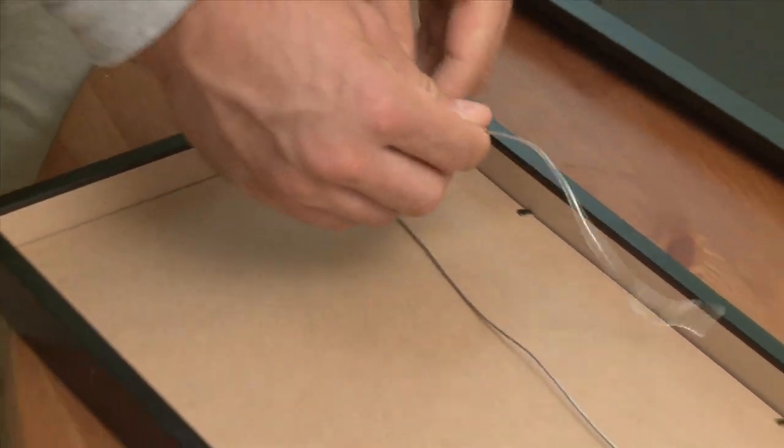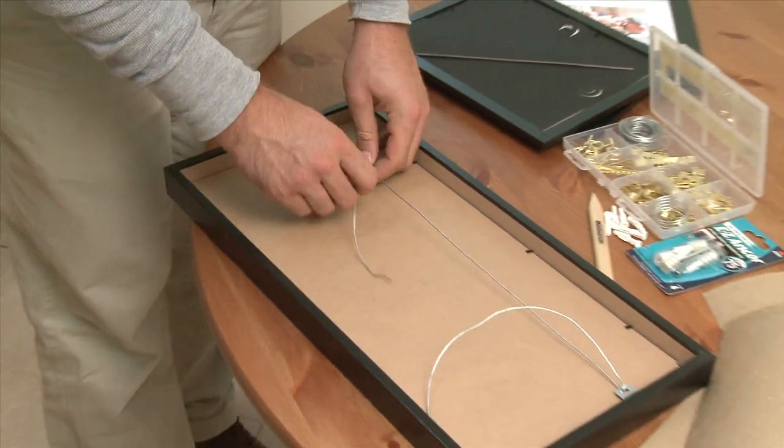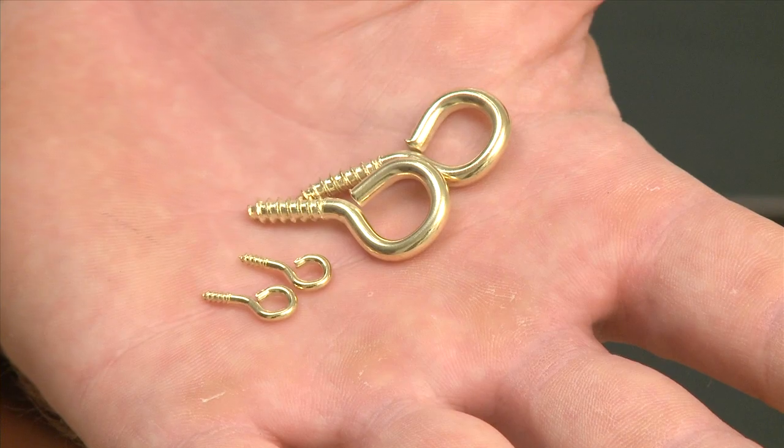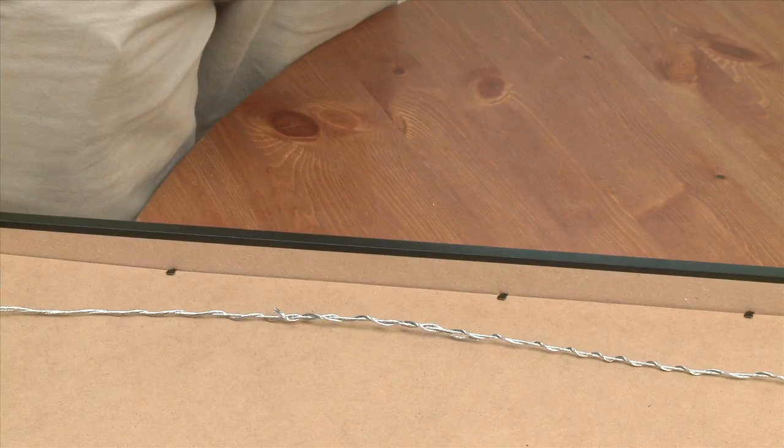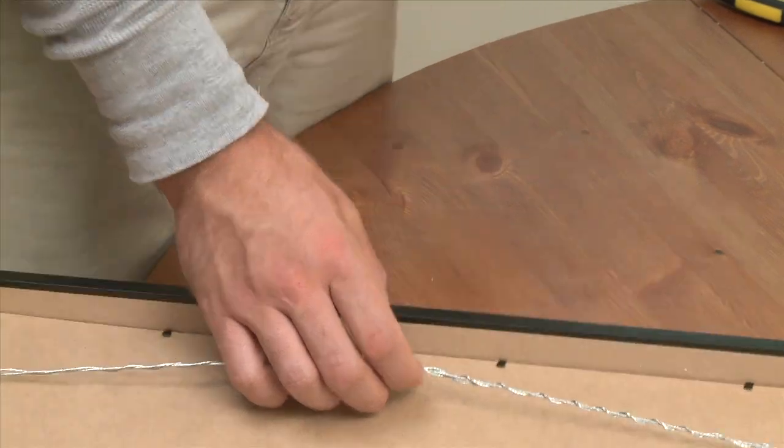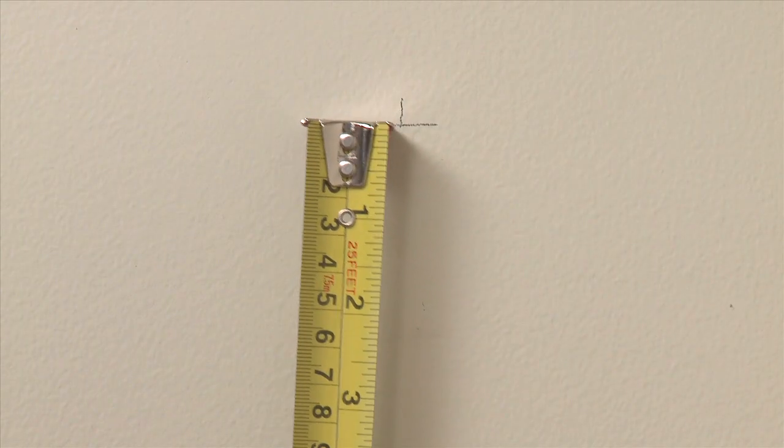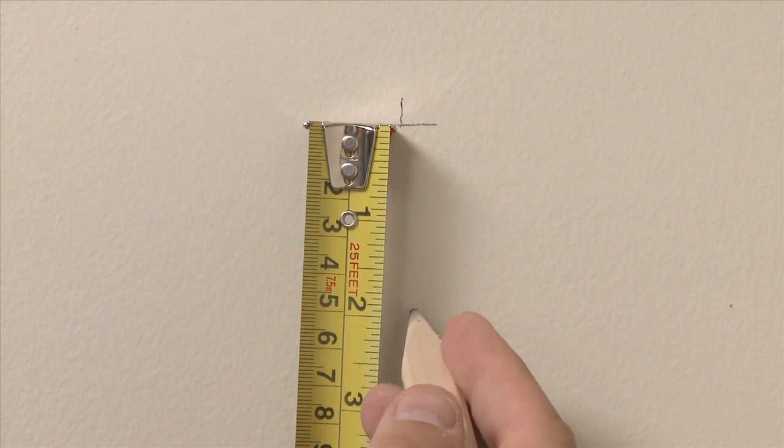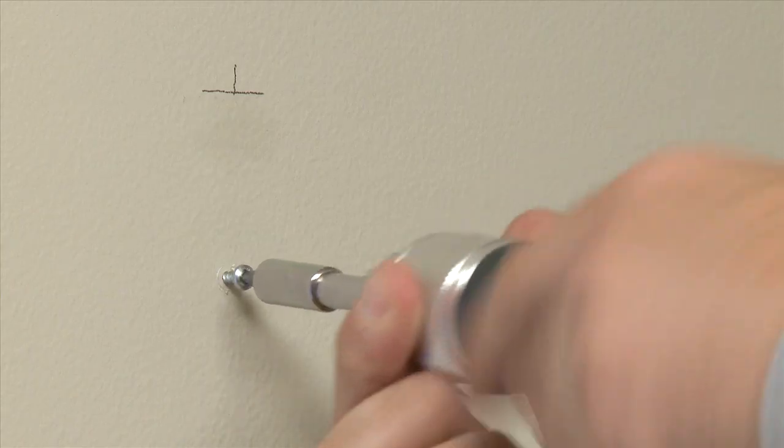For larger pictures, use the frame's hardware or braided wire through screw eyes. Measure from the top of the picture frame to the top of the braided wire. Measure down the same distance from the mark you made with the stud finder. This is where you will put in the screw to hold the painting.